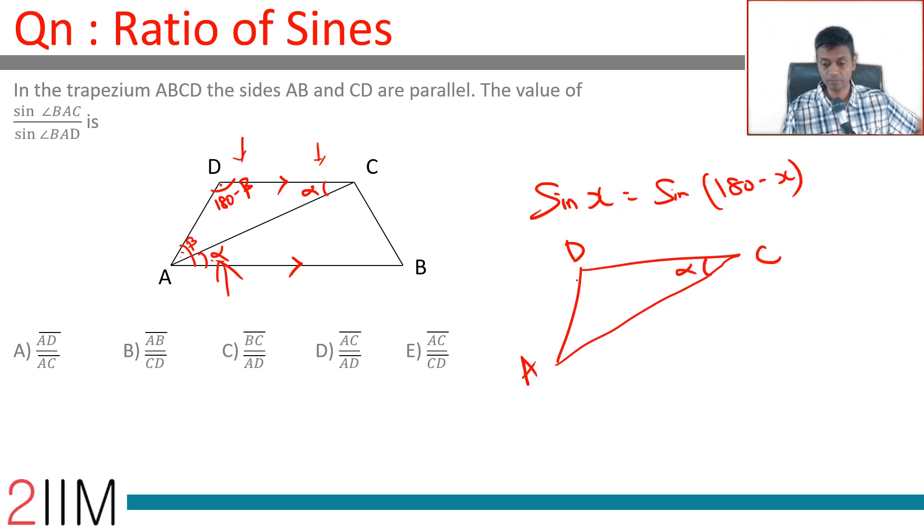This is alpha, this is 180 minus beta. Think about this: a by sine A equals b by sine B equals c by sine C. Or sine alpha by AD equals sine of 180 minus beta by AC.